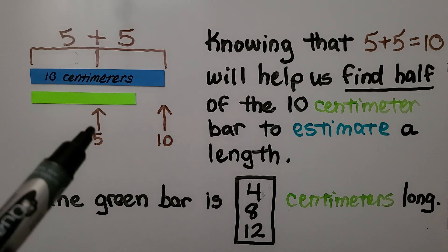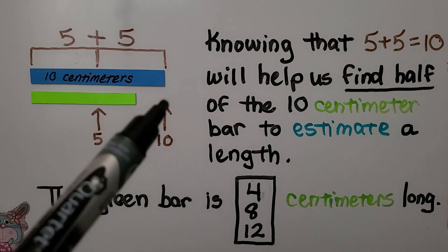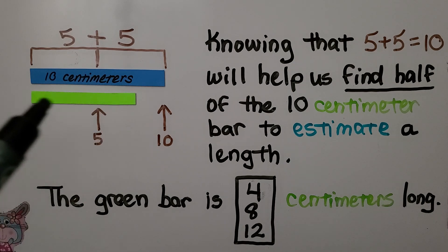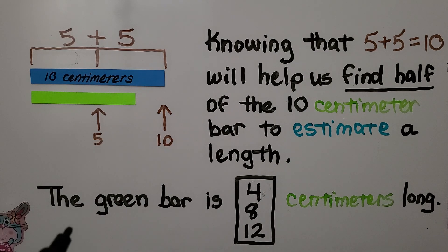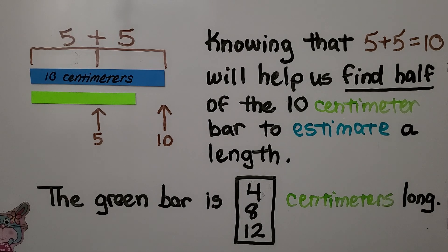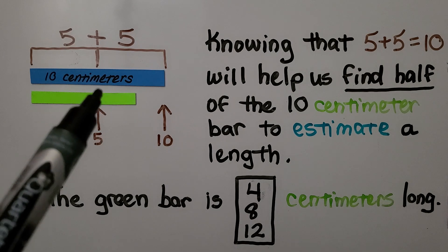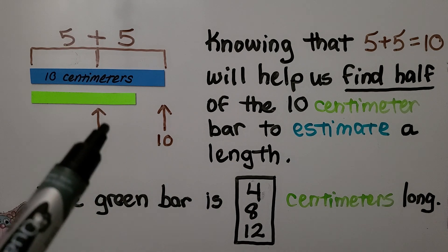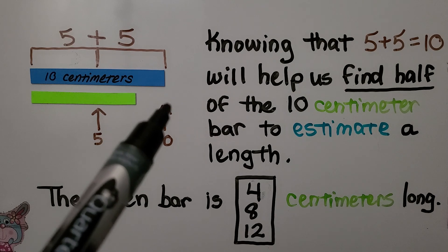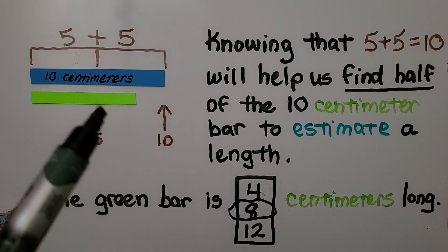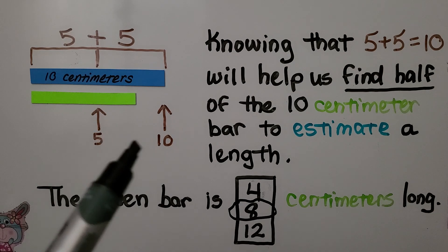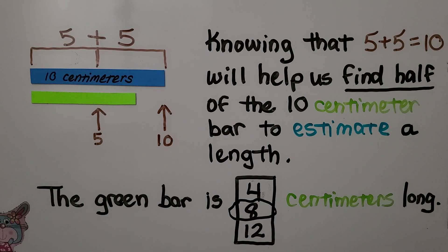If half is 5 and the whole thing is 10, then this green bar is somewhere between 5 and 10. Is the green bar 4, 8, or 12 centimeters long? We can see it's more than 5, so it's not 4, and it's shorter than 10, so it's not 12. It must be 8 centimeters long.